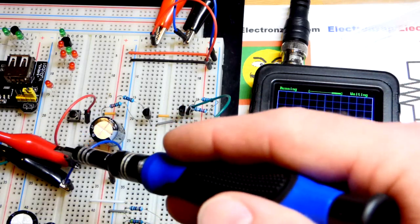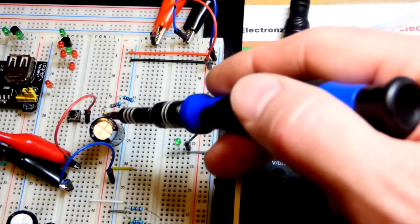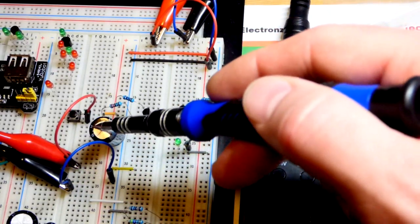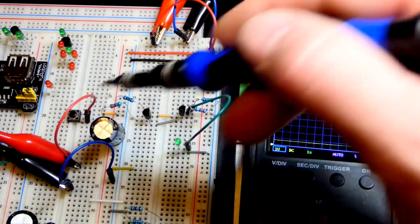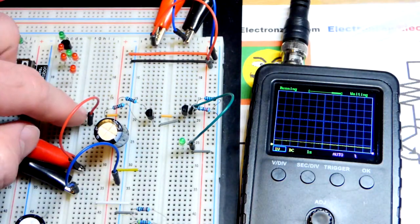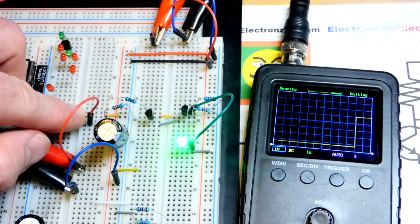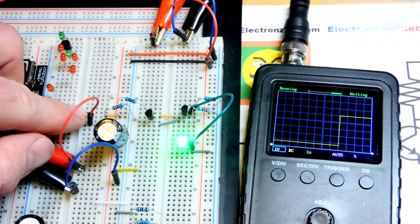In relationship to that we have the red alligator clip that is clipped to a jumper and goes to the positive side of the capacitor. Goes to that side of the switch, other side of the switch goes directly to the positive rail. So when I press the button you're going to see a sudden jump to five volts right there, the power supply voltage that we're using.